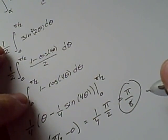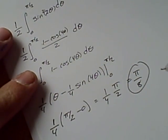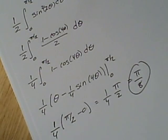So that's the area of one of the petals. If you want to know all 4 of them, you multiply by 4, of course. And you get pi over 2. So there's an example of polar integration.